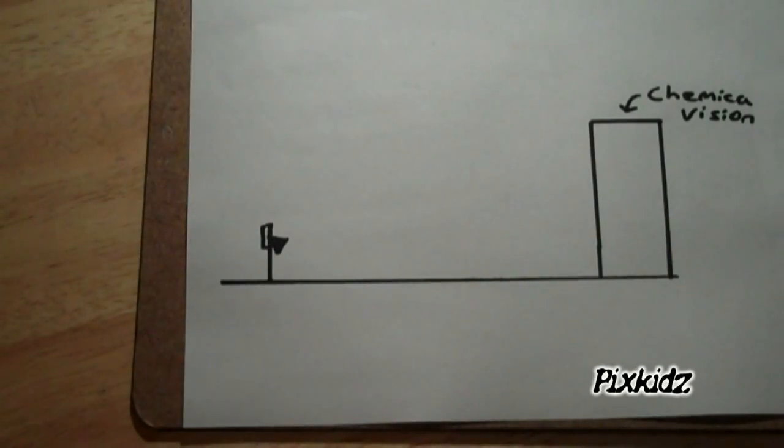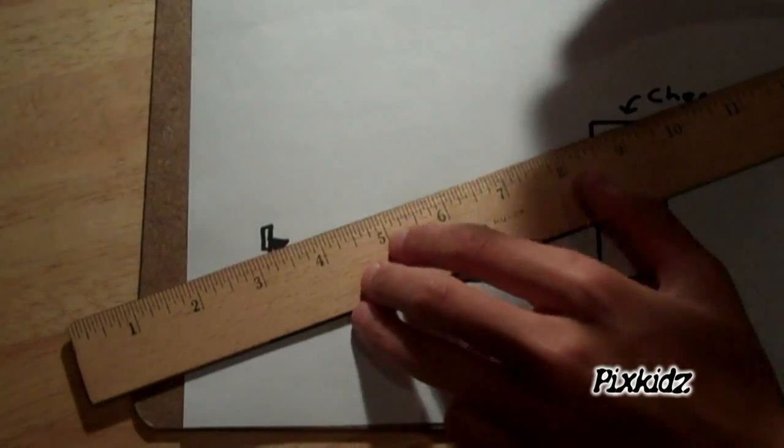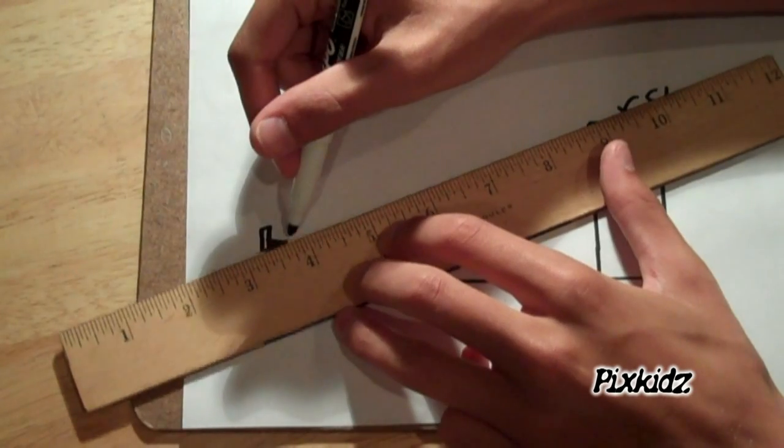Now to find the distance of the shot, I'll be making a line from where Chemical Vision would have stood to where the ball would have traveled to the hoop. That's the top of it, to here.